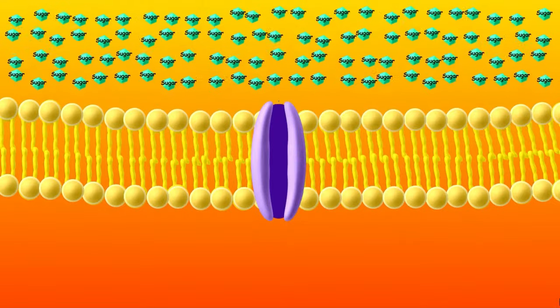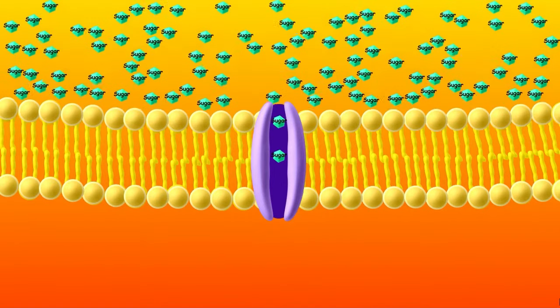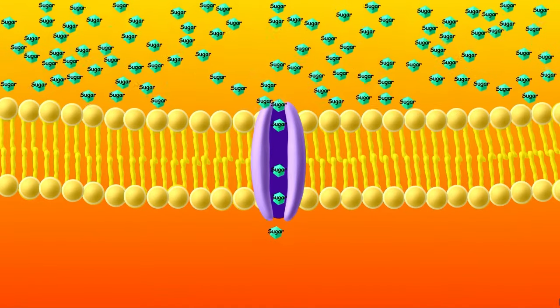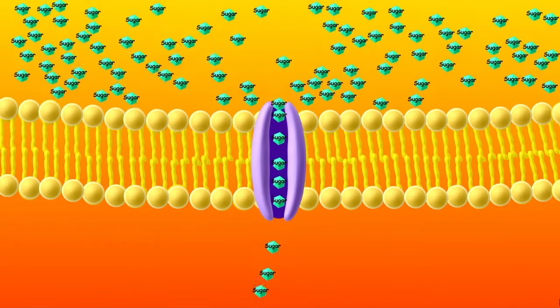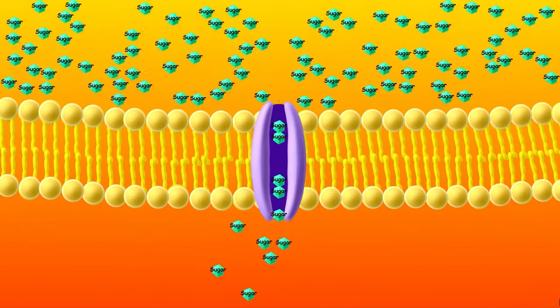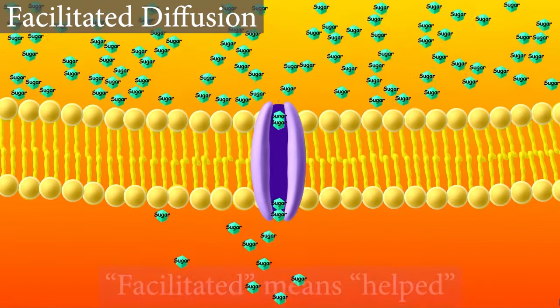The answer is facilitated diffusion. Proteins, like this purple one here, can act as channels to transport sugars or other substances that can't pass through the bilayer across the membrane. The protein acts like a tunnel that allows the substance through. This is called facilitated diffusion because the protein helps diffusion to happen.